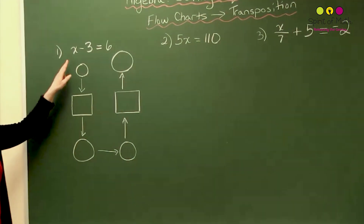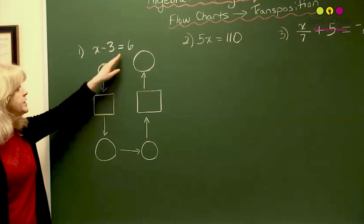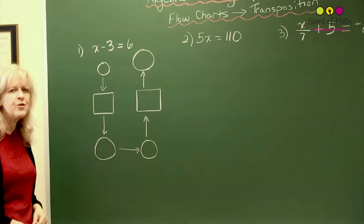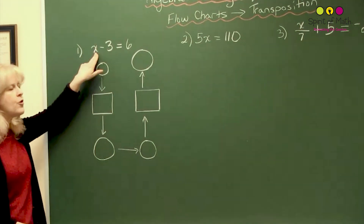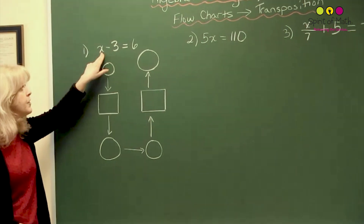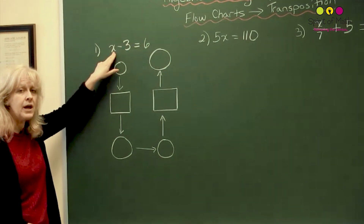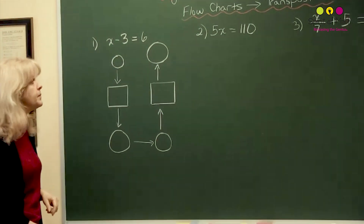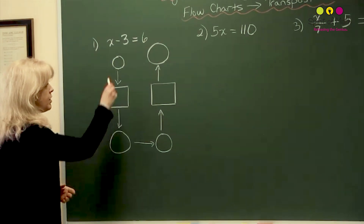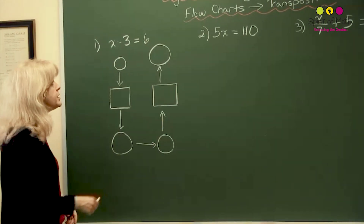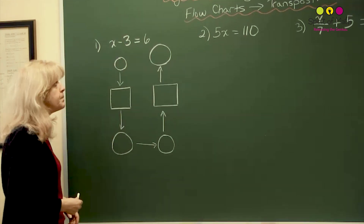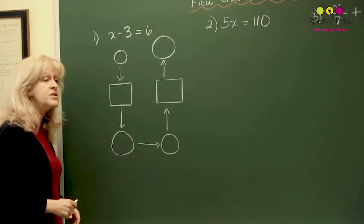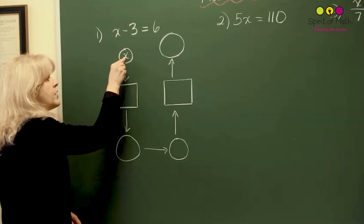Let's start with this equation first. This is called an equation, not an expression, because you have two sides to the equation, and what you're going to do is solve for x — find out what number the variable x will be. In a flow chart, it looks something like this, created for this first equation. Whenever you start a flow chart, notice there's a little circle to indicate where you put the variable x.